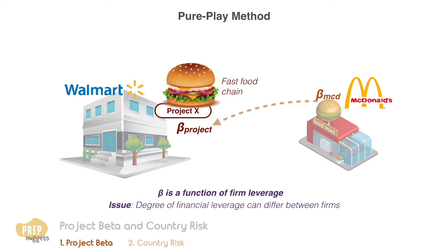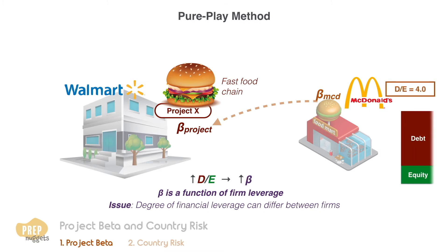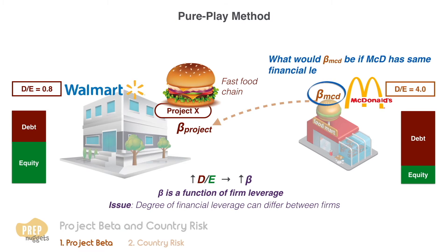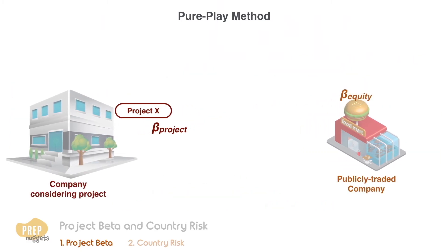In general, the higher a firm's debt-to-equity ratio, the greater is its beta. So if McDonald's debt-to-equity ratio is 4.0 while Walmart's is 0.8, we cannot just use McDonald's beta on Walmart's capital structure. We need to find what McDonald's beta would be if it had the same degree of leverage as Walmart's.